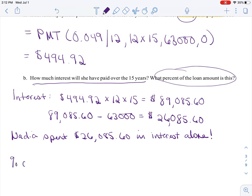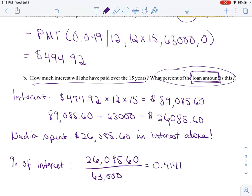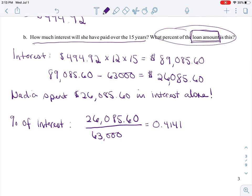So the percent of interest, well, your part is $26,085.60. And it said what percent of the loan amount? That gives it away to know what your denominator is. So it's divided by your loan amount. And if we do this in the calculator or Excel or Google, we get 0.4141. So what that tells you, the interest is about, since I am rounding, 41% of the loan amount.